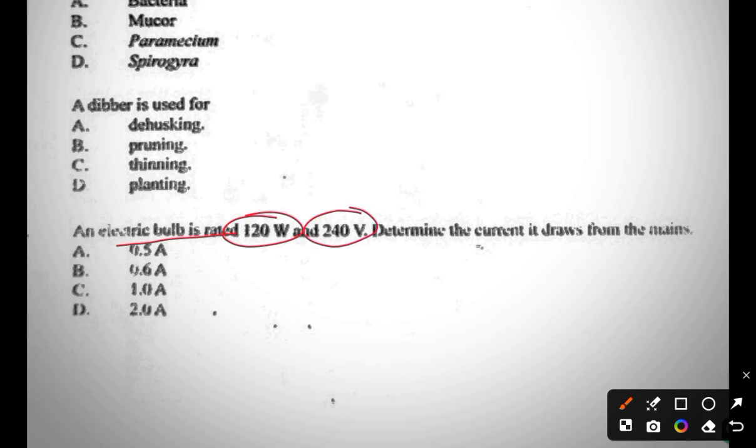Question four involves a little bit of calculation. An electric bulb is rated 120 watts and 240 volts. Determine the current it draws from its mains. So the power is 120 watts, then the potential difference is 240 volts, determine the current.